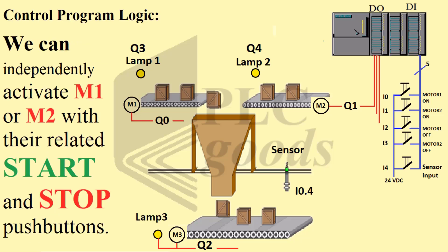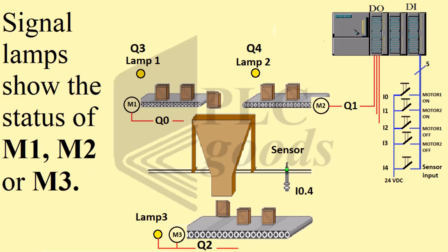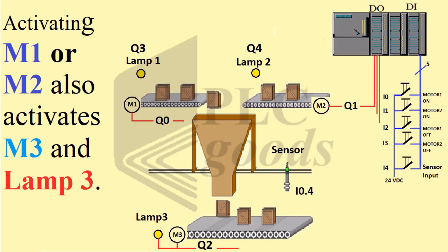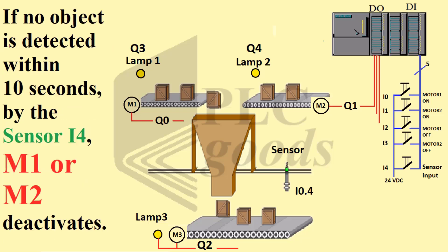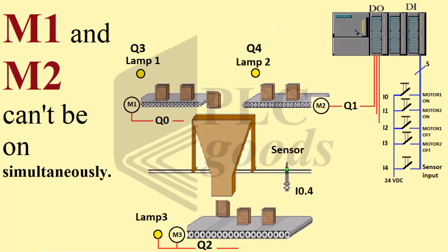The control program logic allows us to independently activate M1 or M2 with their related start and stop push buttons. Signal lamps show the status of M1, M2, or M3. Activating M1 or M2 also activates M3. After pressing any related stop push button, M1 or M2 stops after five seconds and M3 after seven seconds. If no object is detected within 10 seconds by sensor I4, M1 or M2 deactivates. M1 and M2 cannot be on simultaneously.